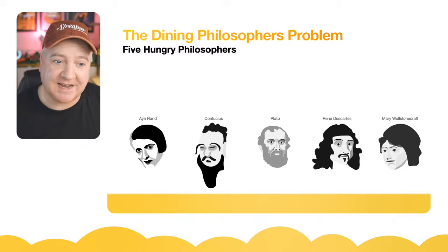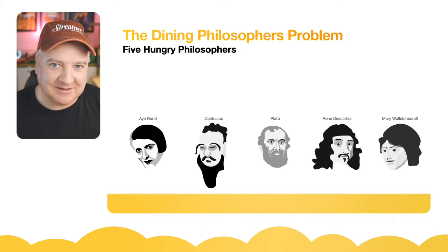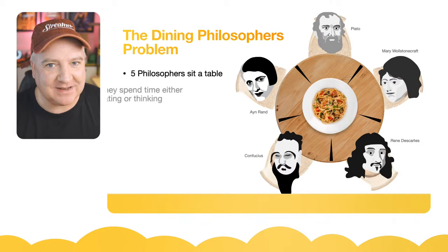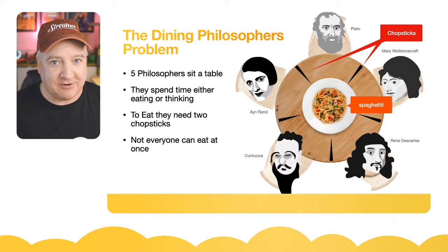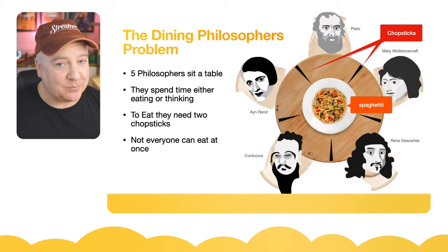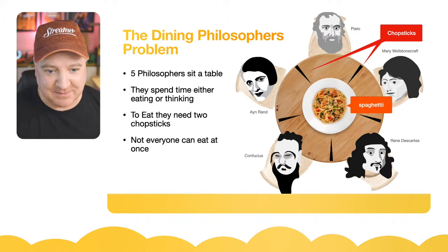There's a famous problem in computer science called the dining philosophers problem. There are five hungry philosophers: Ayn Rand, Confucius, Plato, Descartes, and Mary Wollstonecraft, all seated around a big table. In the middle is a bowl of spaghetti, and they have a chopstick to their right and to their left. Philosophers spend their time between thinking and eating. To eat they need two chopsticks - but there are only five chopsticks for five philosophers.